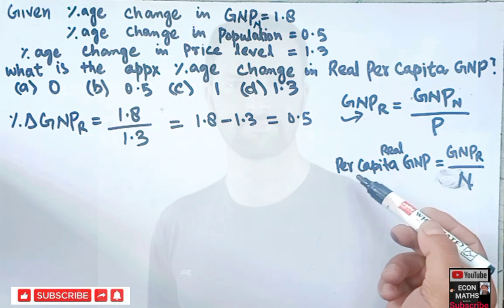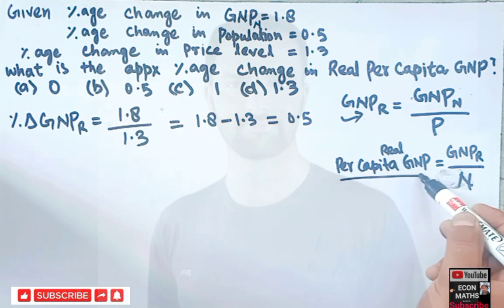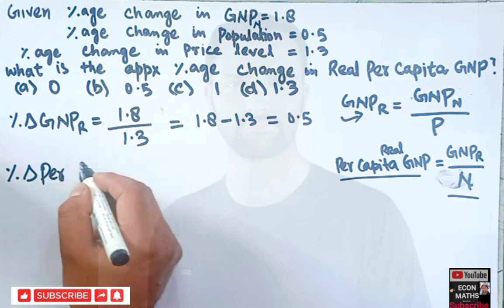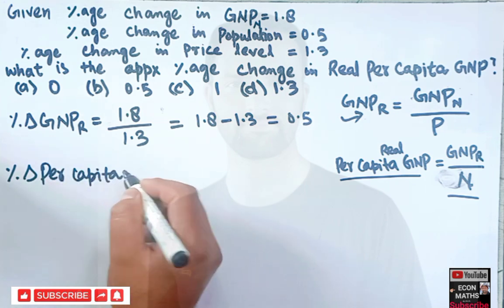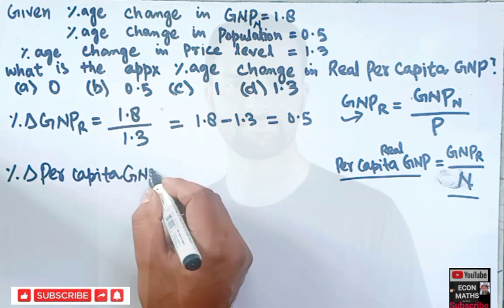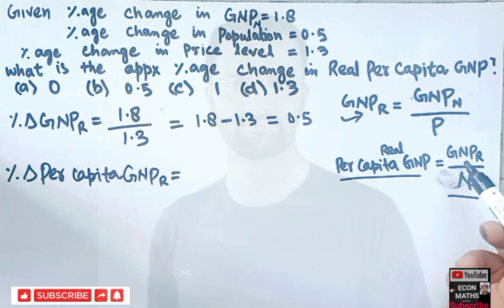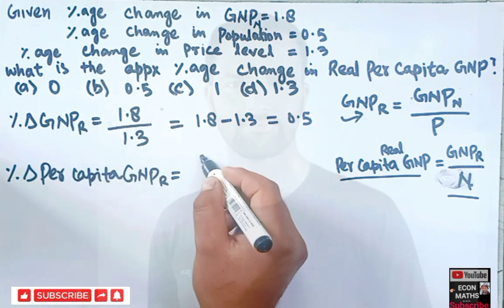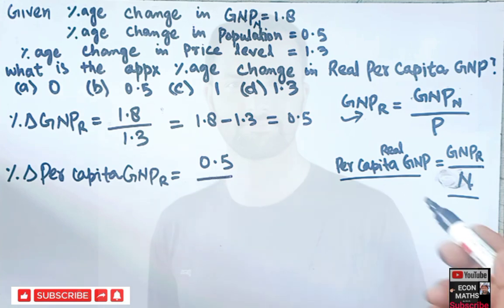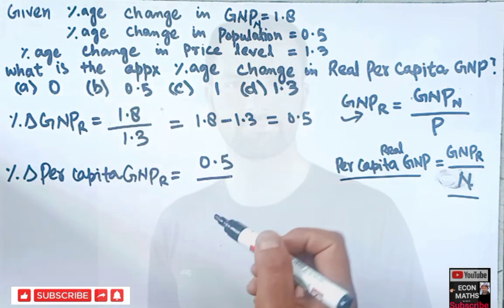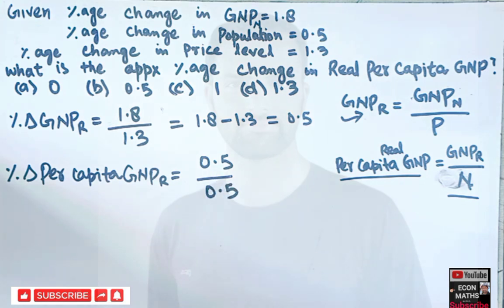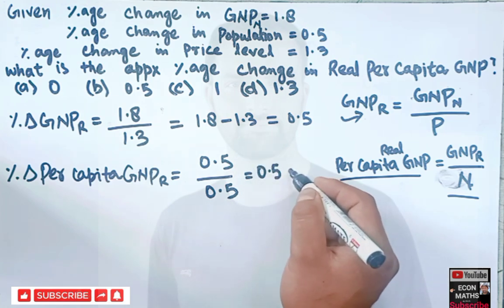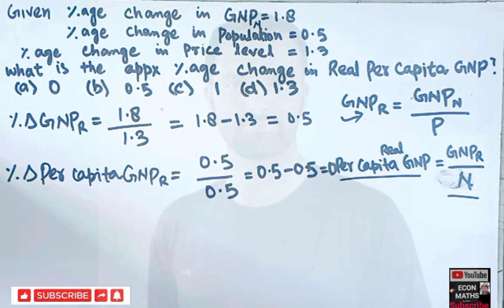Now, for per capita real GNP: percentage change in per capita real GNP equals percentage change in real GNP minus percentage change in population. We got 0.5% for real GNP, and population growth is also given as 0.5%. So 0.5 minus 0.5 equals 0. The percentage change in per capita GNP is 0.